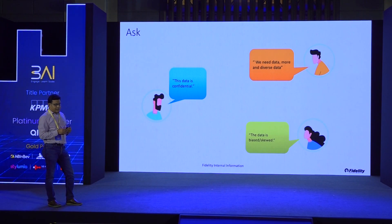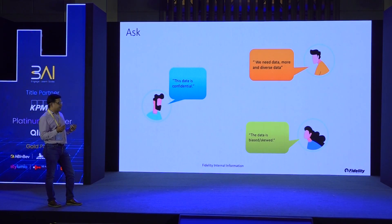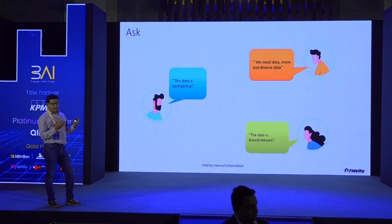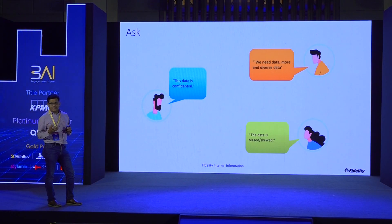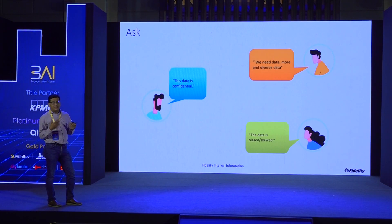That's the second problem, and a third problem did get mentioned a couple of times today. A lot of data we get is biased or skewed. When I say bias, the regular things about gender and race get discussed, but the skew creates a lot of problems in use cases like fraud detection. Hardly one in 10,000 cases are fraud, so if you want to use that to train a model, it's very difficult.